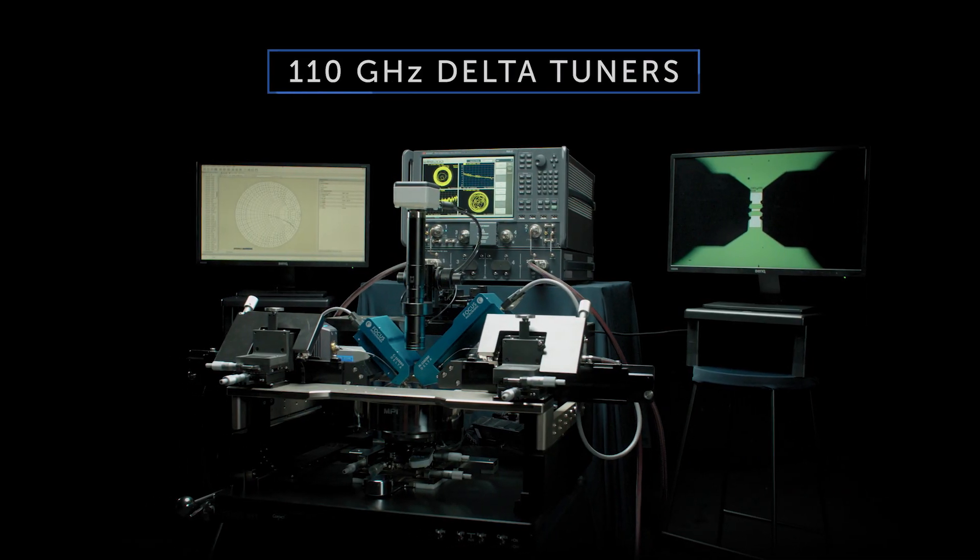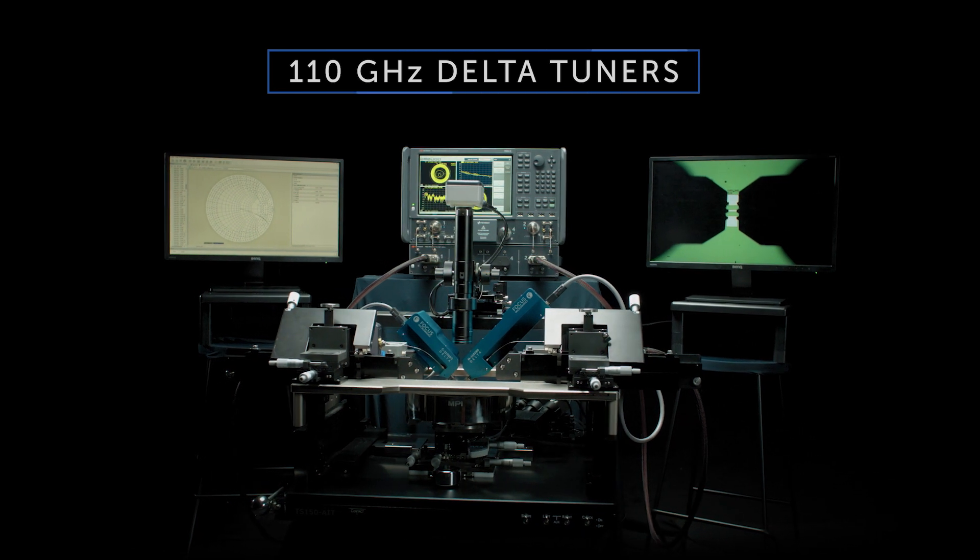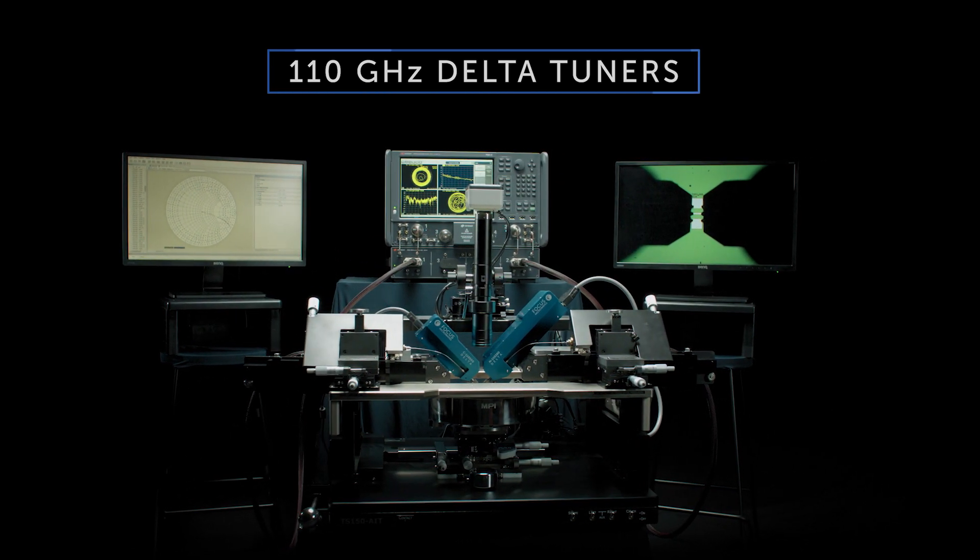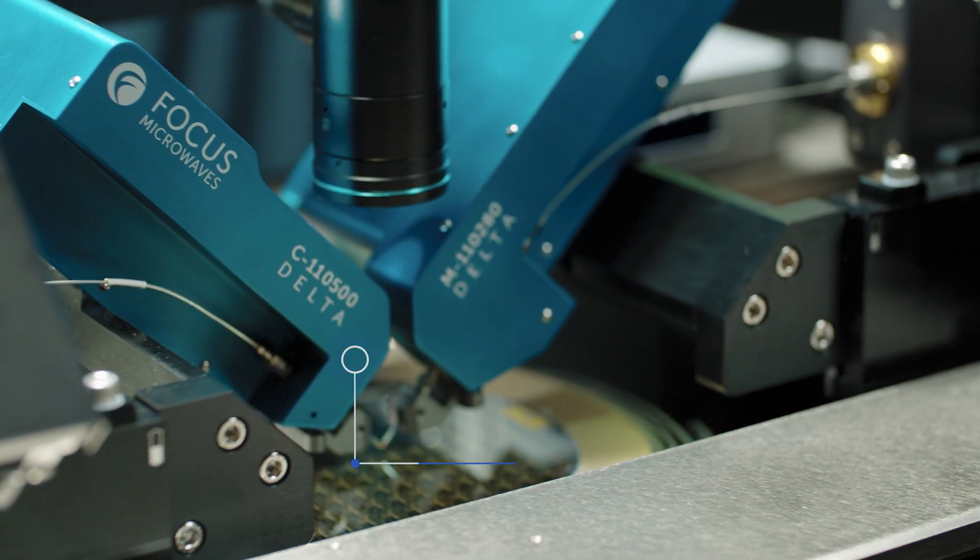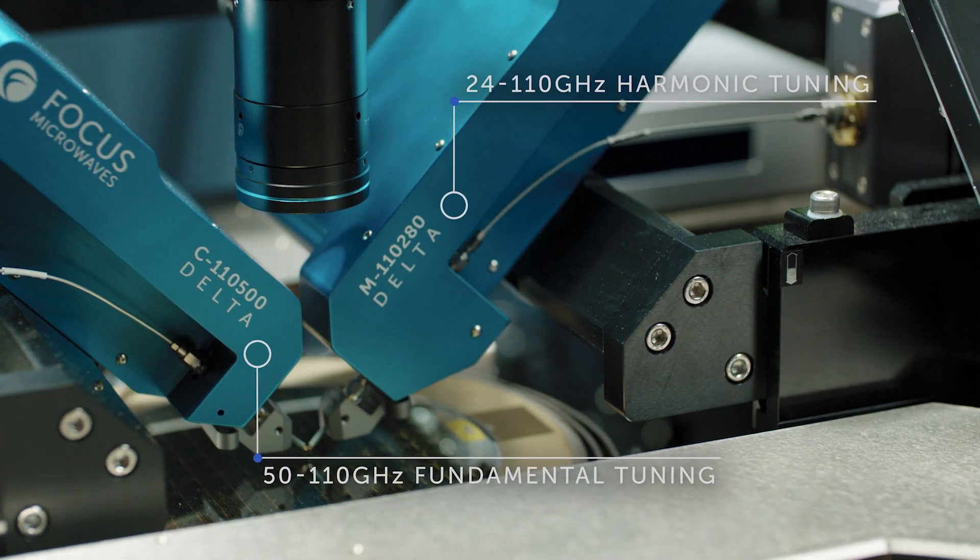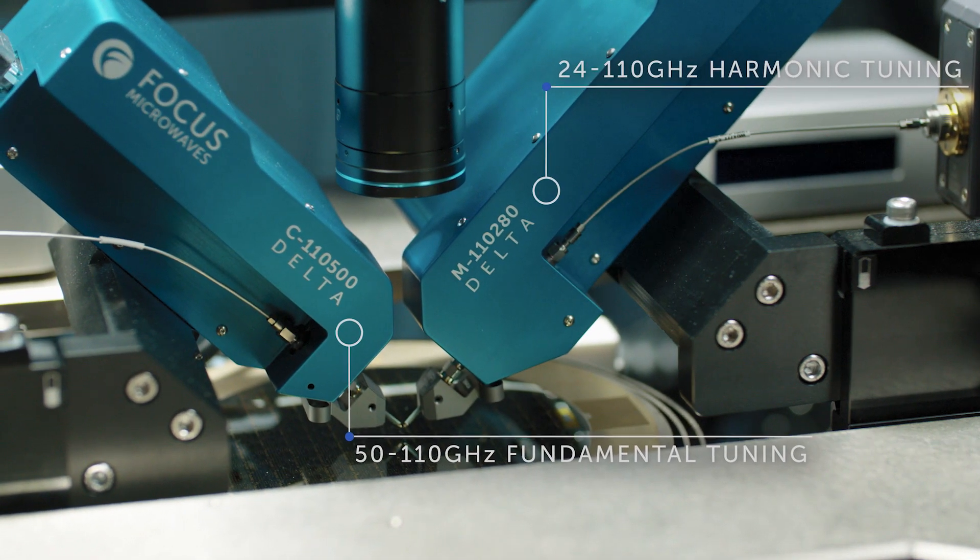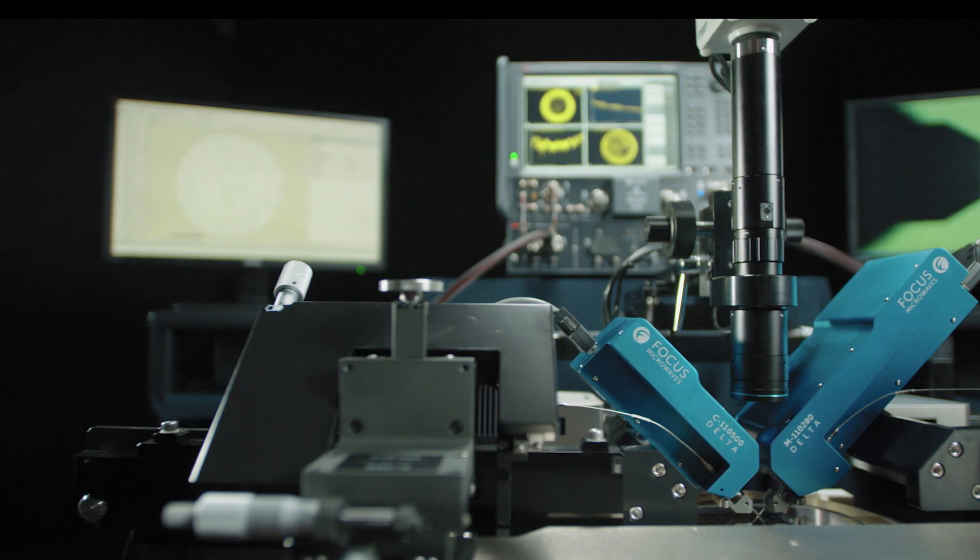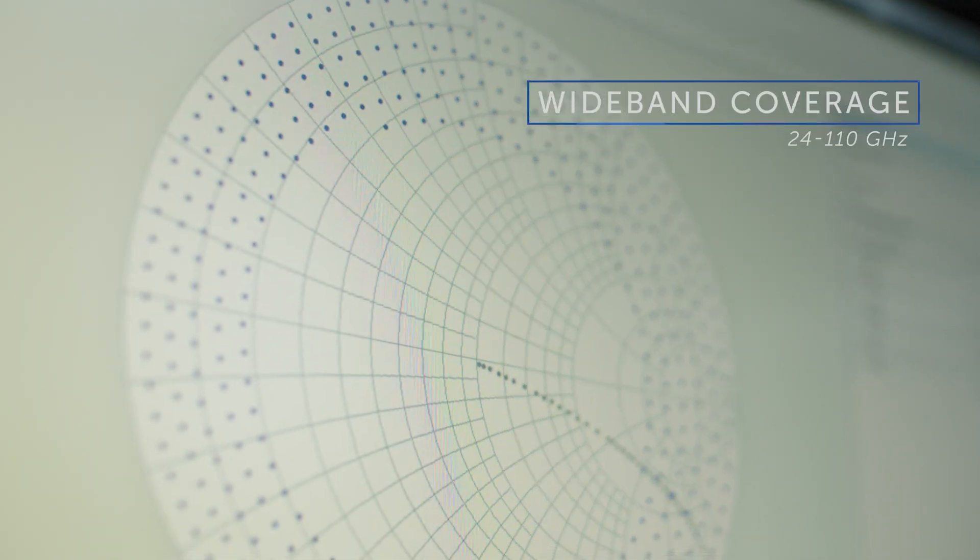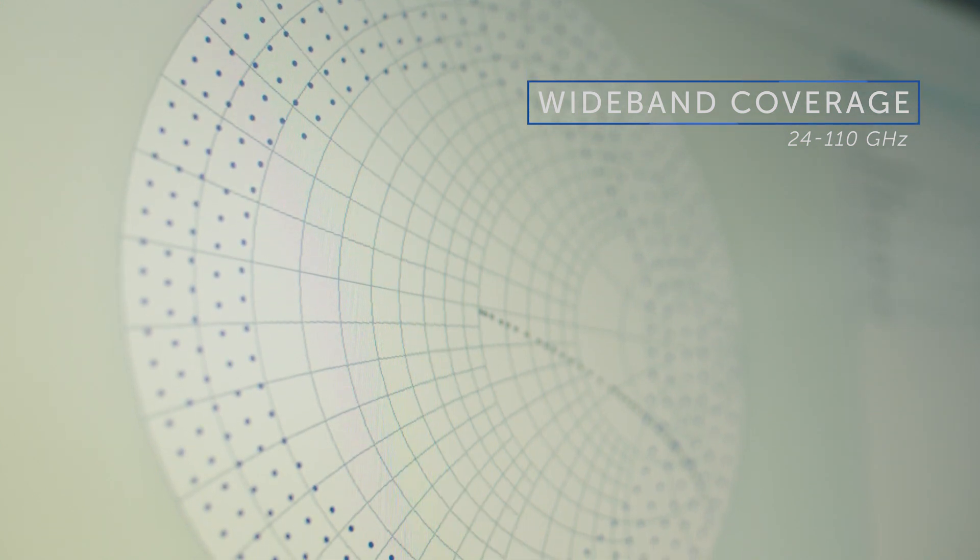The all-new 110 GHz Delta tuners allow for wideband tuning with maximum gamma of 24 to 110 GHz. They are designed for broadband, non-50 ohm measurements on millimeter wave devices using three independently controlled precision tuning probes. Users can select ultra-wideband probes for best frequency coverage or narrowband high VSWR probes for specific applications.